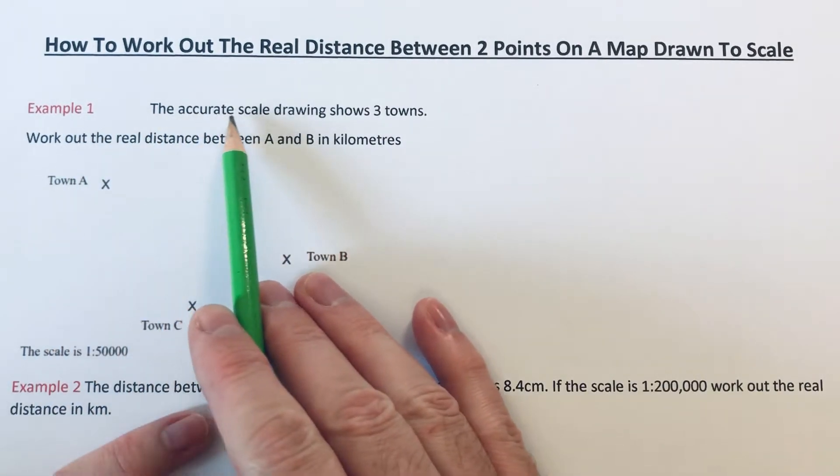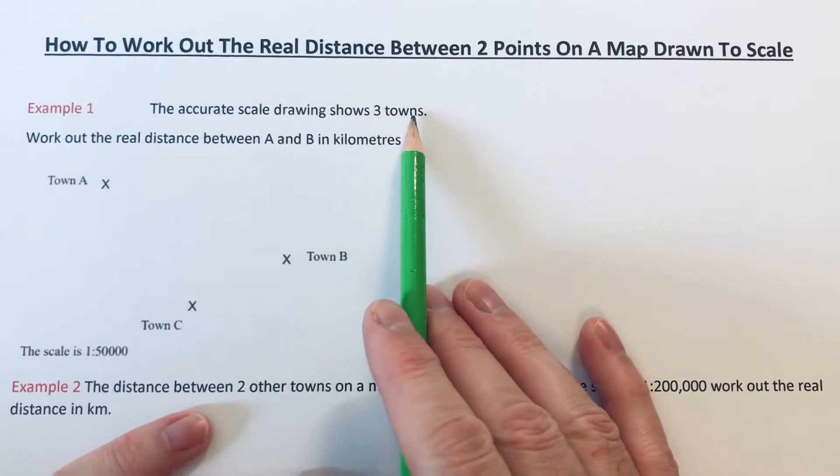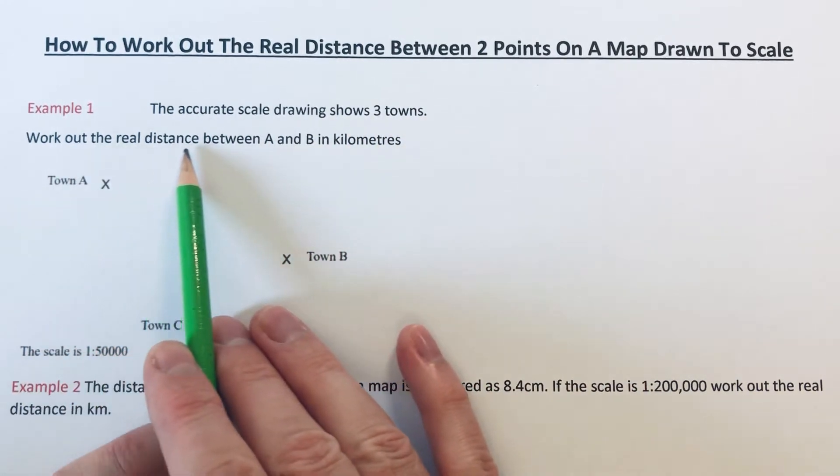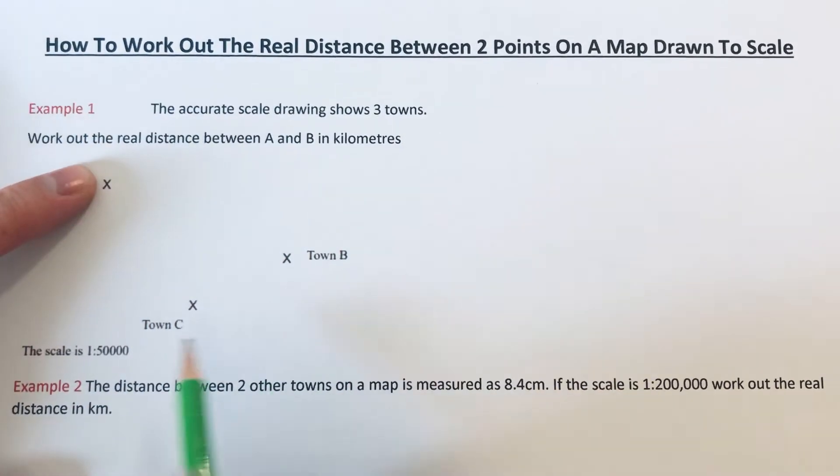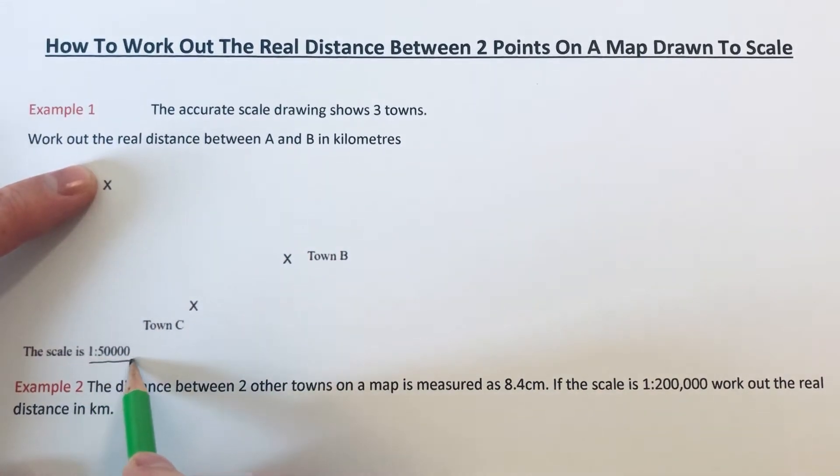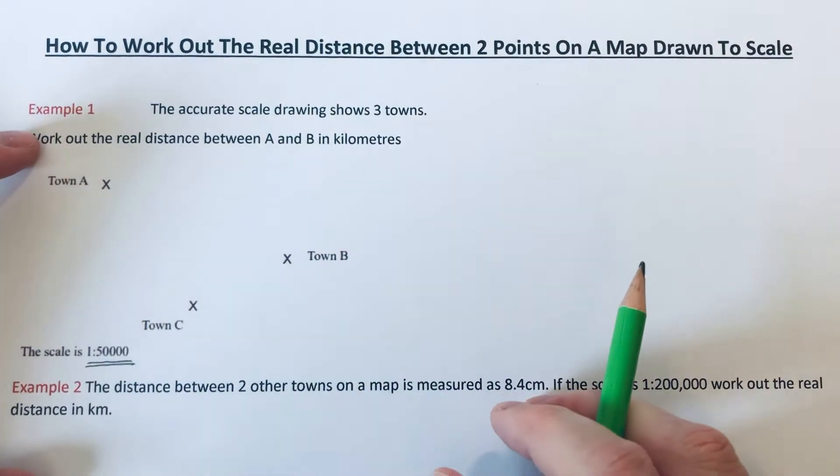The accurate scale drawing shows three towns. We're going to work out the real distance between A and B in kilometers. The scale on the map is 1 to 50,000.